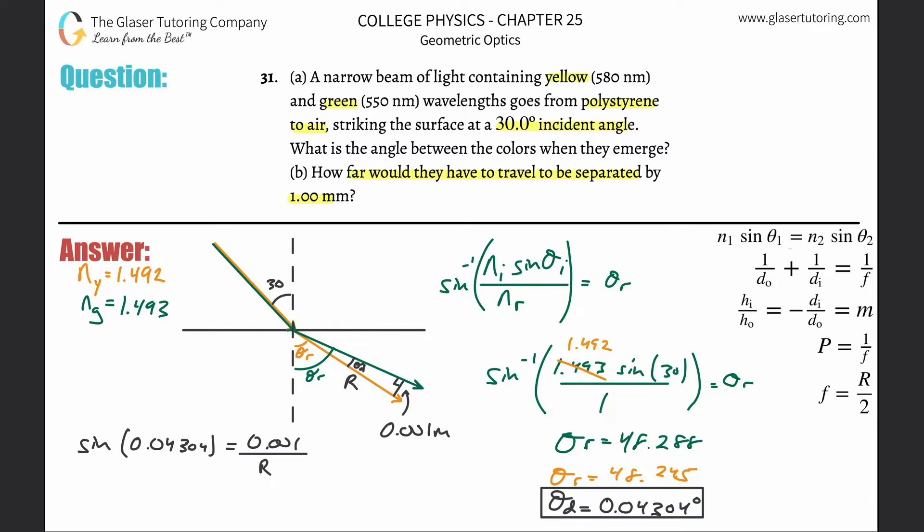So sine of that angle theta d of 0.04304 equals the opposite side 0.001 over the hypotenuse r. Simply cross multiply this now, and this is what you're going to do. Calculate r, so this is now going to be 0.001 divided by sine of that exact number we found before. Plug it in and here we go, we get a value of 1.331 or so-ish, and we probably would basically have three sig figs, so I'm going to leave it at that.